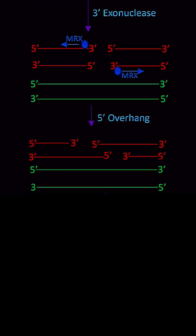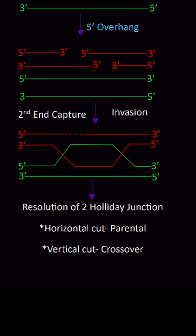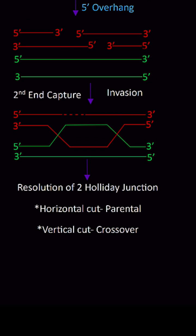Then invasion and second-end capture happens and forms two Holliday junctions.